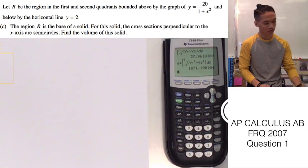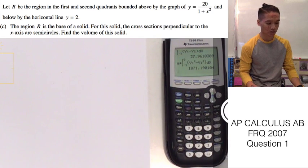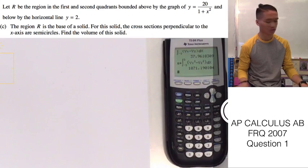Now, part C is saying the region R is the base of a solid. For this solid, the cross sections perpendicular to the x-axis are semicircles. Find the volume of this solid.